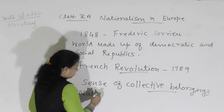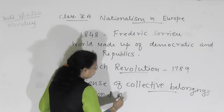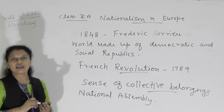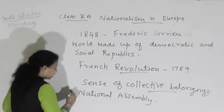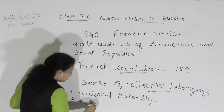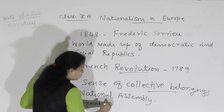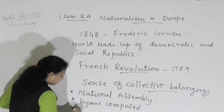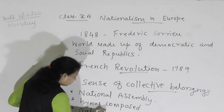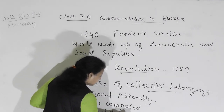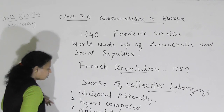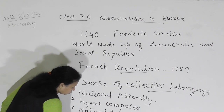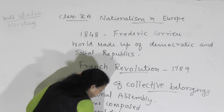Second, hymns — patriotic songs for the country — were composed for the nation. Third, a national anthem was made. Additionally, martyrs from the French Revolution were commemorated, meaning those who participated in the French Revolution and became martyrs were given due respect, representing that they gave their lives to make the country a nation.